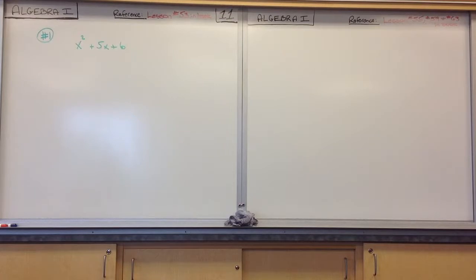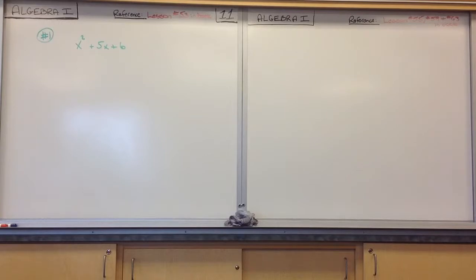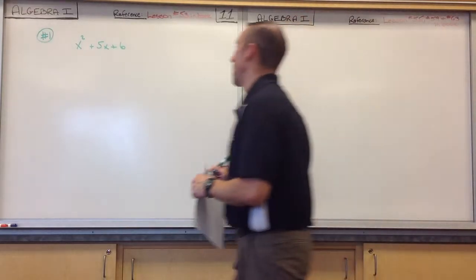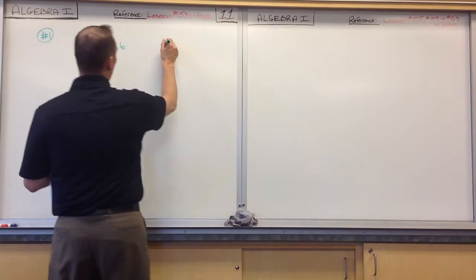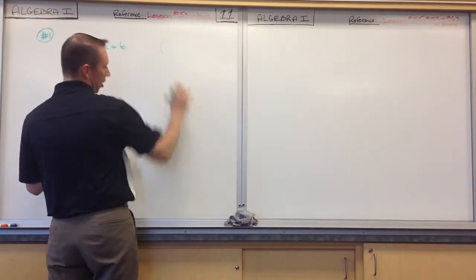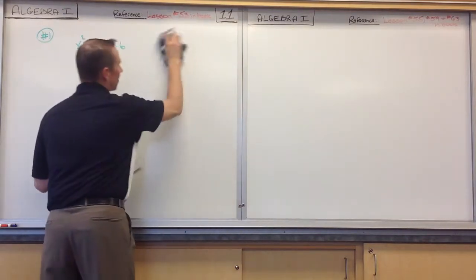This answer that you got is what we got in the previous problems where we multiplied out. Factoring is just the reverse FOIL method. That's all it is — it's the reverse FOIL method.